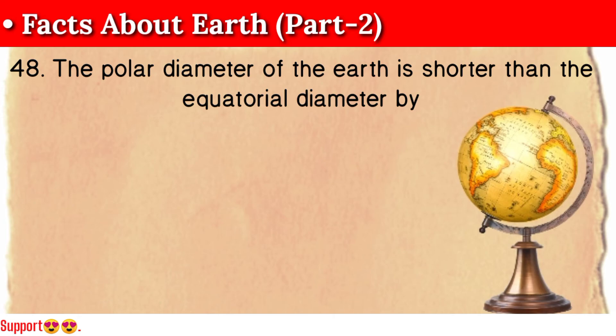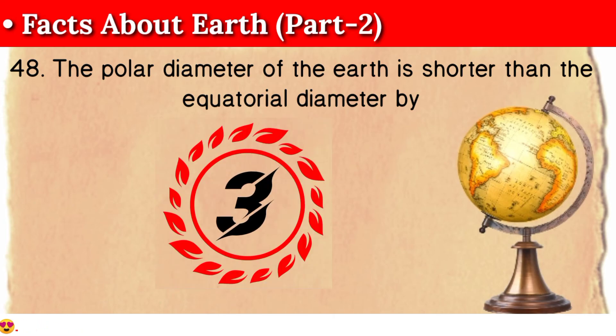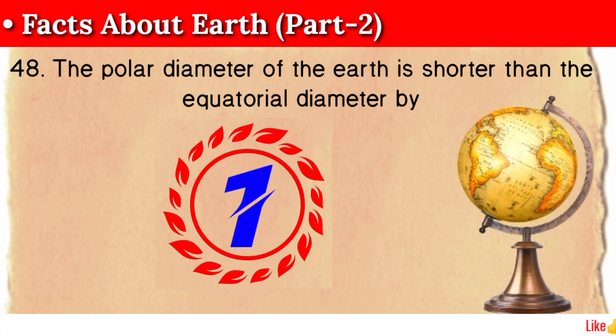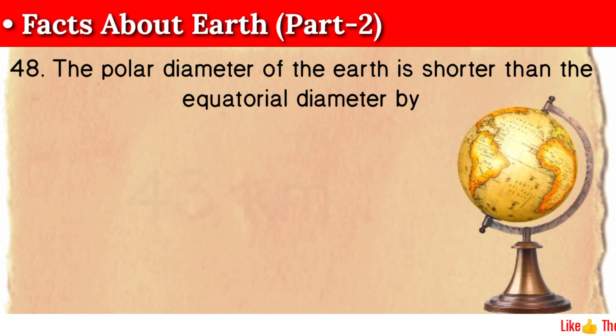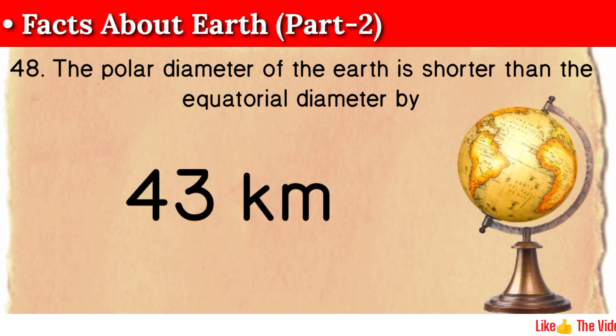Question 48: The polar diameter of the Earth is shorter than the equatorial diameter by 43 kilometers.